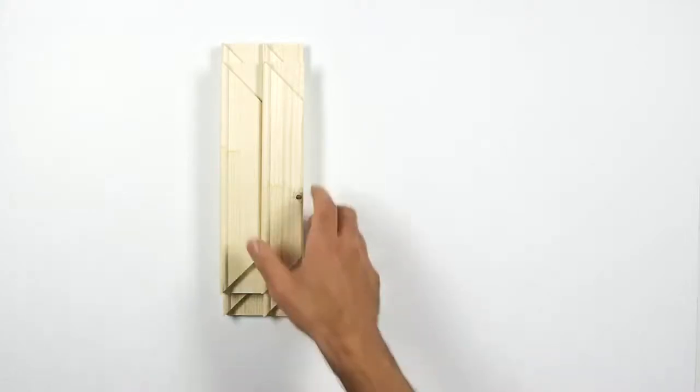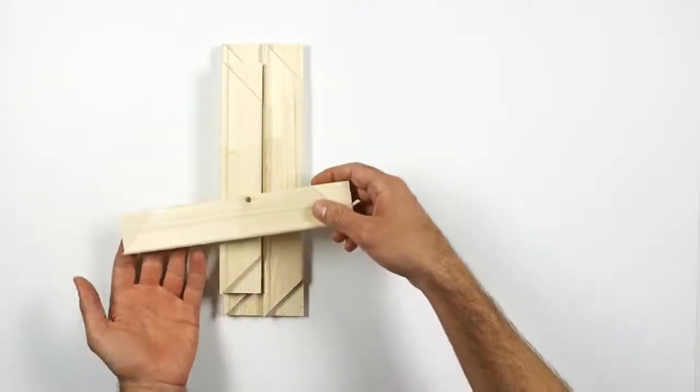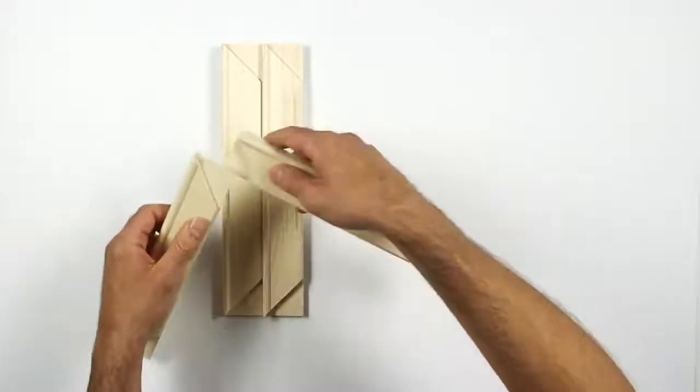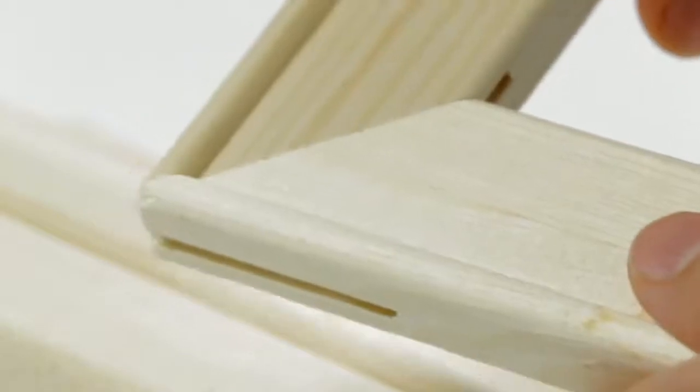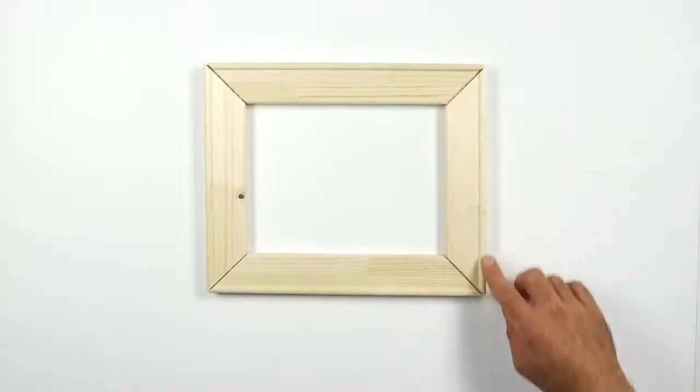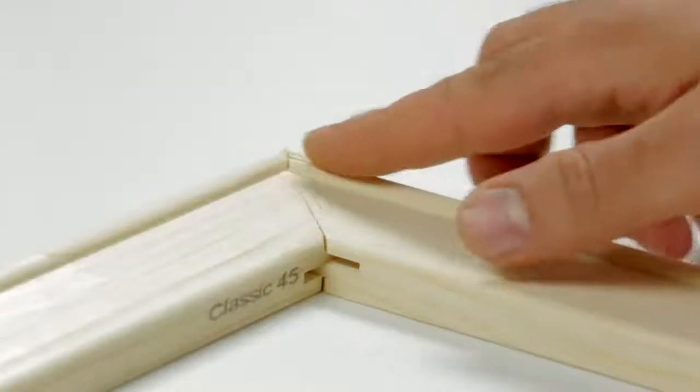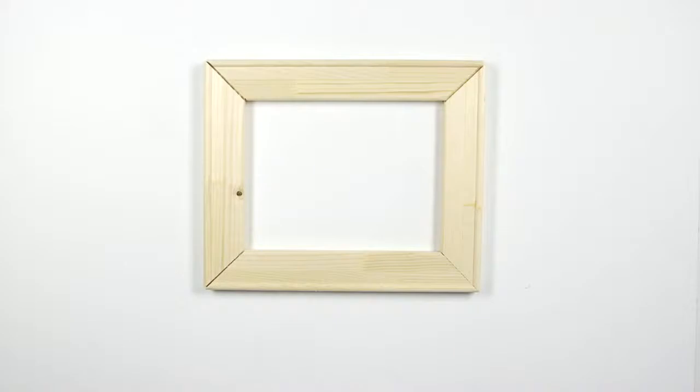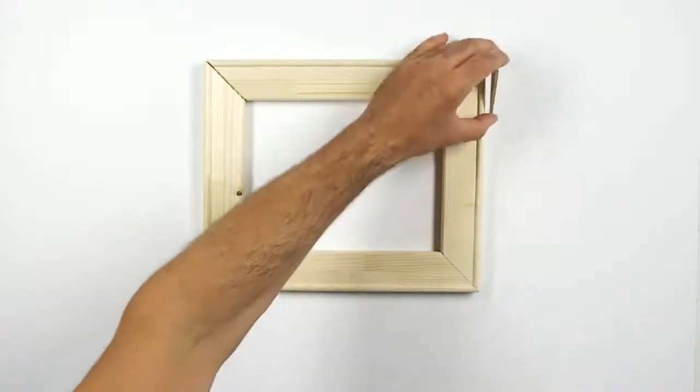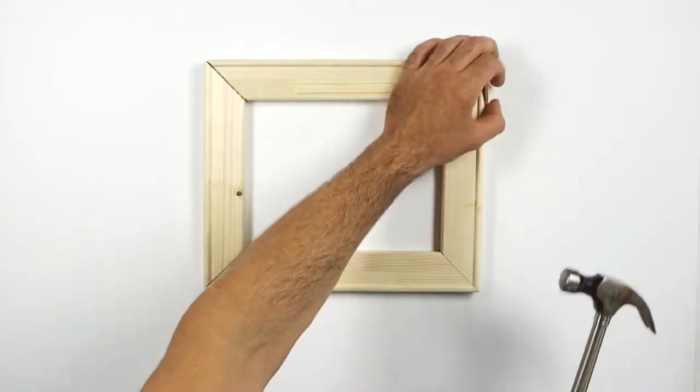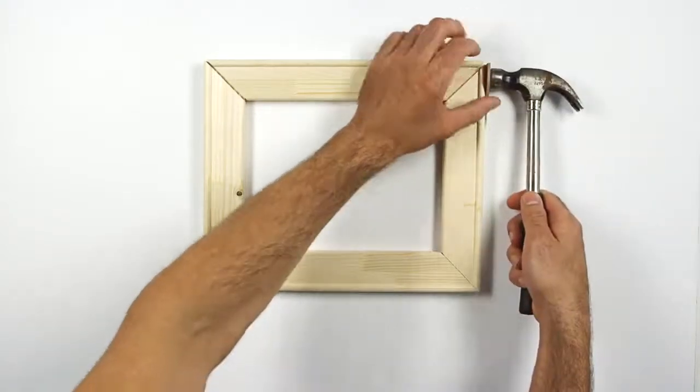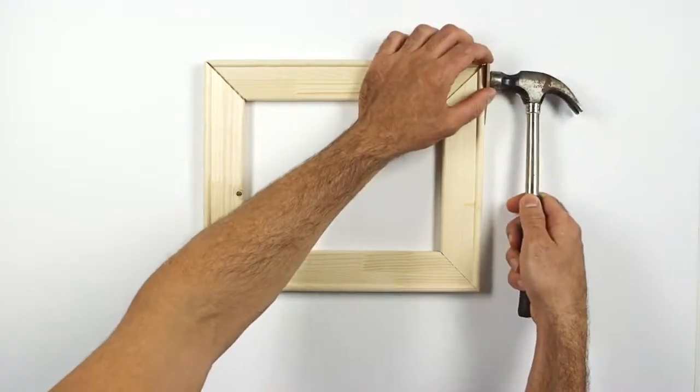First, assemble the stretcher bars making sure they are all the same way up. The side with the lip you can see here is the side that will be against the canvas. Use a hammer or mallet to tap the stretchers so that they fit tightly together. You'll see that I've used a spare wedge to protect the stretcher from getting dented by the hammer.